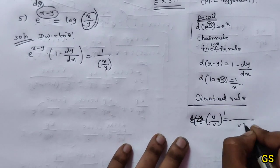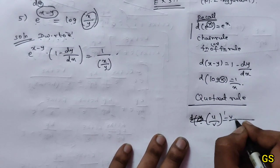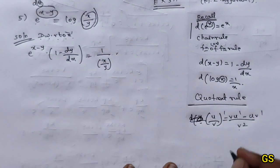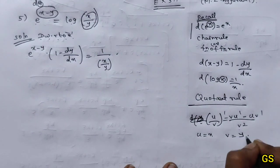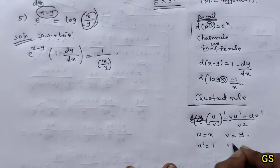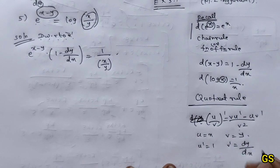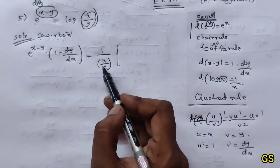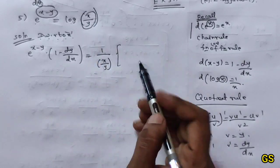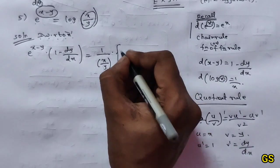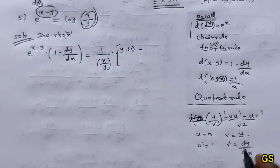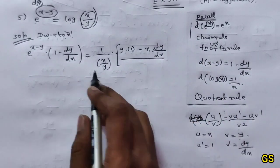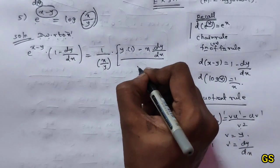So u by v whole dash — the formula is: v squared in the denominator, v into u dash minus u into v dash. Here u is x and v is y, so u dash is 1 (differentiating x) and v dash is dy/dx (differentiating y). Substituting: v into u dash is y into 1, minus u into v dash is x into dy/dx, all over v squared which is y squared.